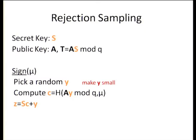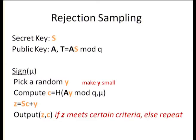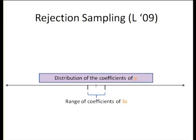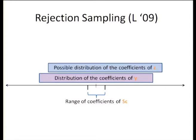We want Z, C to be independent of S so that the extracted solution is not trivially zero, and we want the norm of Z to be small so that SIS is hard. The key question is how to pick the random Y to satisfy both properties. If you make Y uniformly random mod Q, it would hide SC completely, but Z would be too big and the SIS solution would be uninteresting.